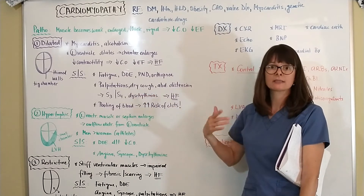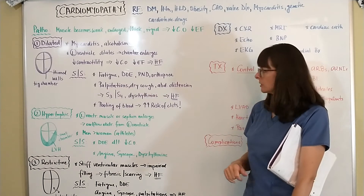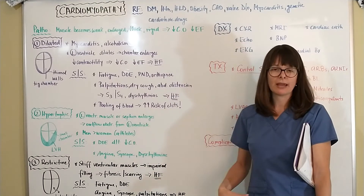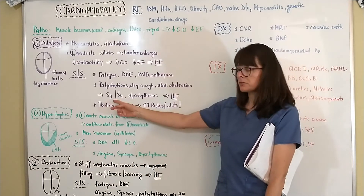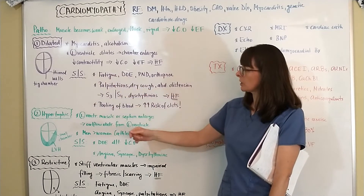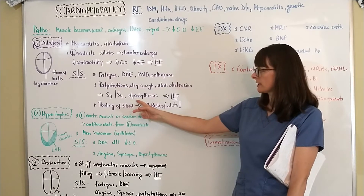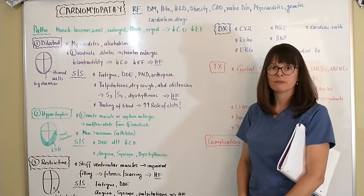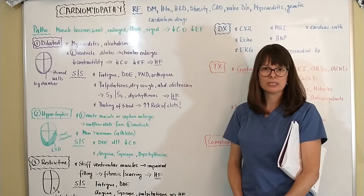Signs and symptoms of dilated cardiomyopathy include fatigue, dyspnea on exertion, paroxysmal nocturnal dyspnea, and orthopnea. The patient may complain of palpitations and a dry cough as heart failure develops and fluid backs up into the lungs. There may be abdominal distension, hepatosplenomegaly, murmurs, S3 and S4 heart sounds, arrhythmias on EKG, crackles in the lungs, peripheral edema, and JVD.